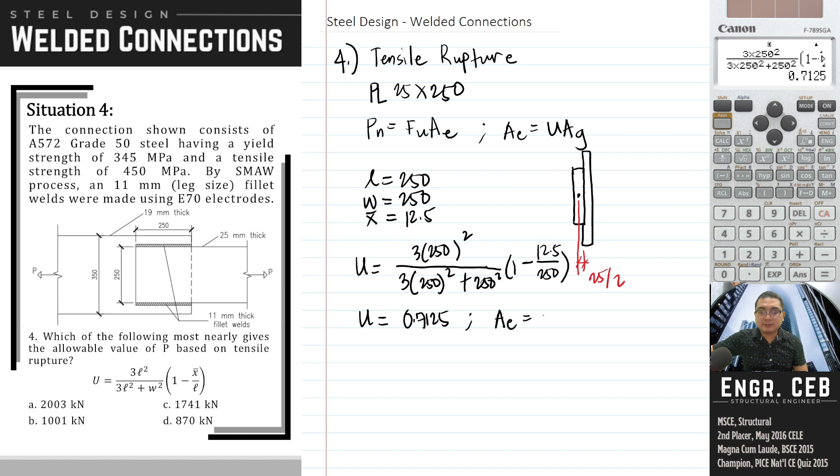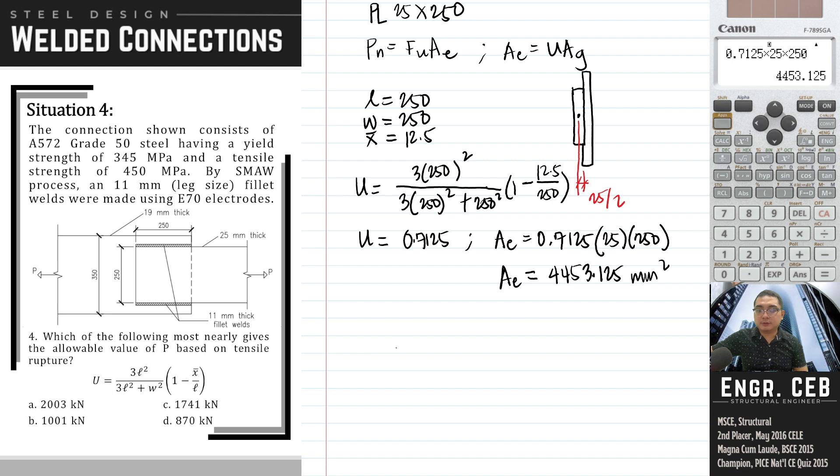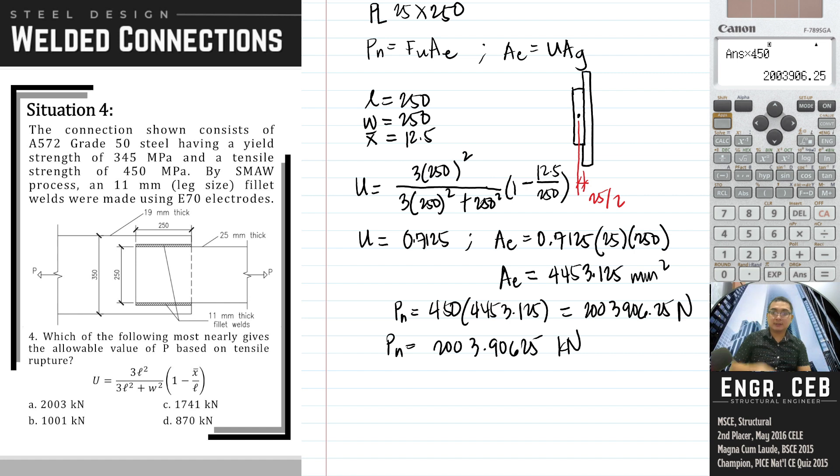The shear lag factor is 0.7125. Substituting, AE equals 0.7125 times the gross area, which is 25 by 250, giving 4453.125 mm². To complete Pn, we have 450 times AE, which equals 2003906.25 N, or 2003.91 kN.